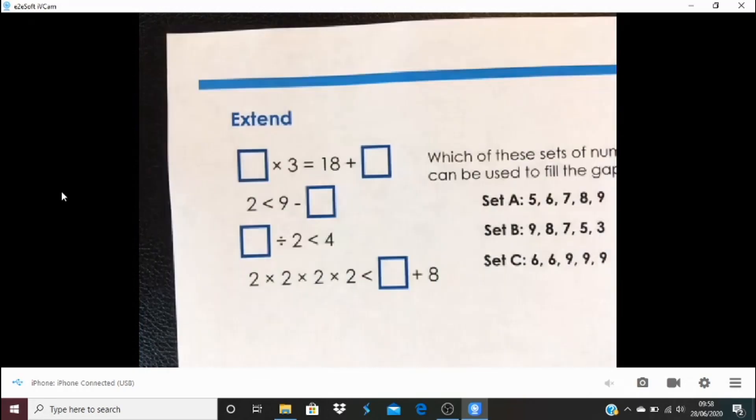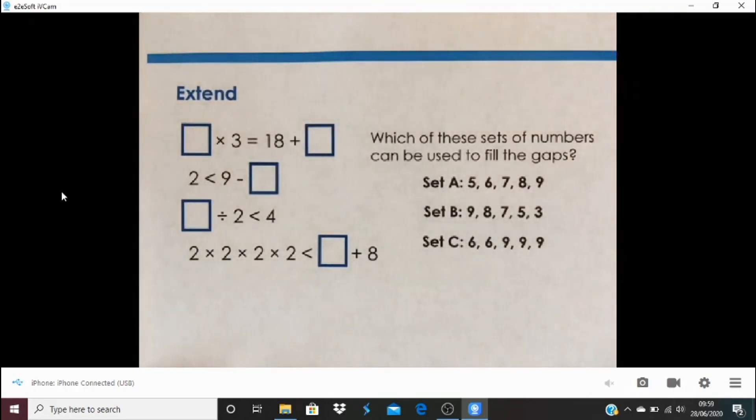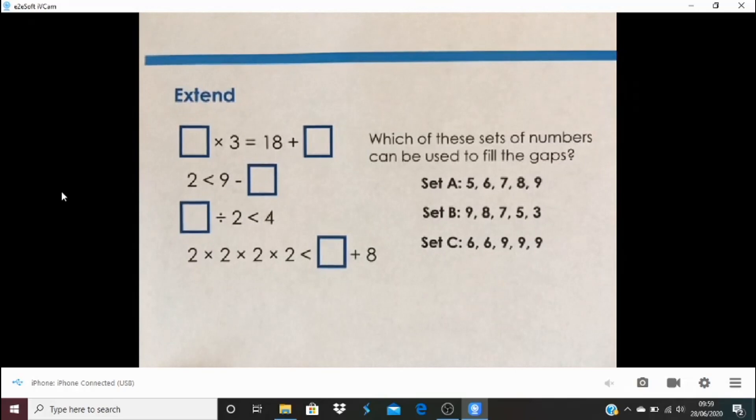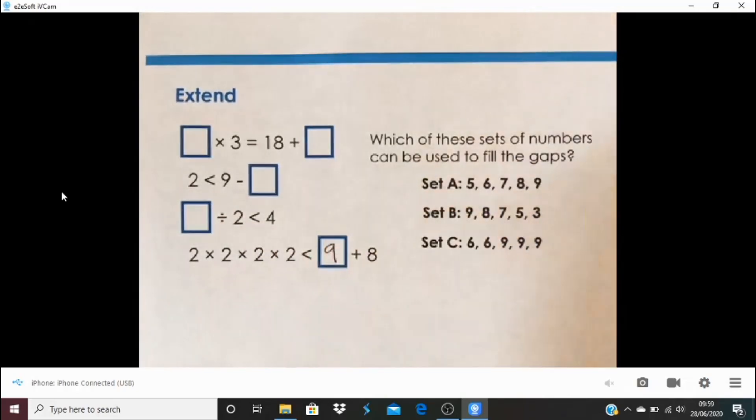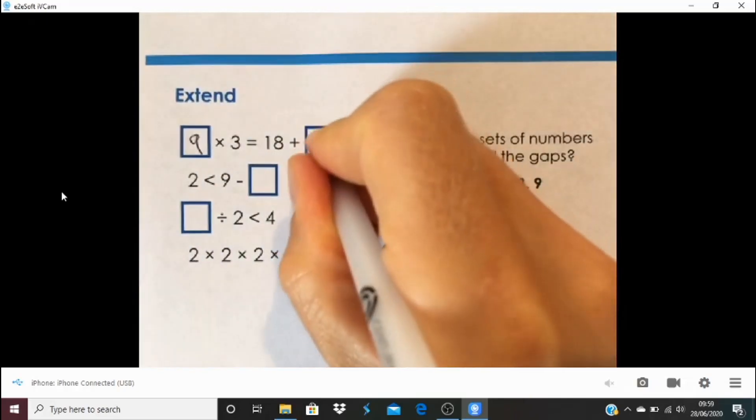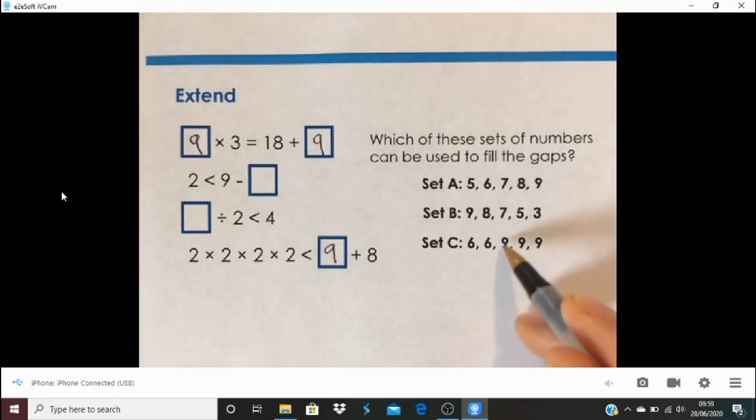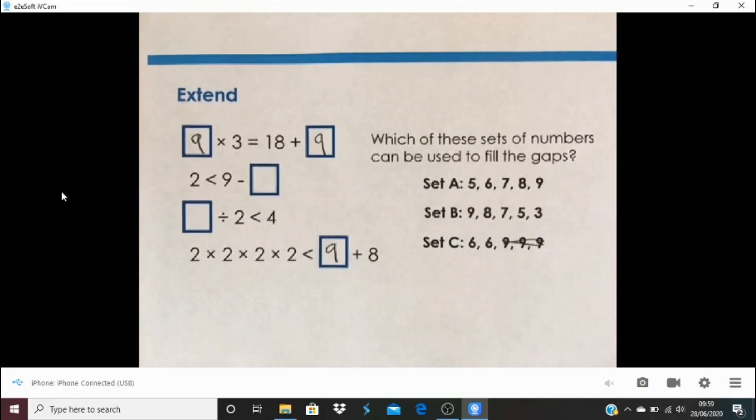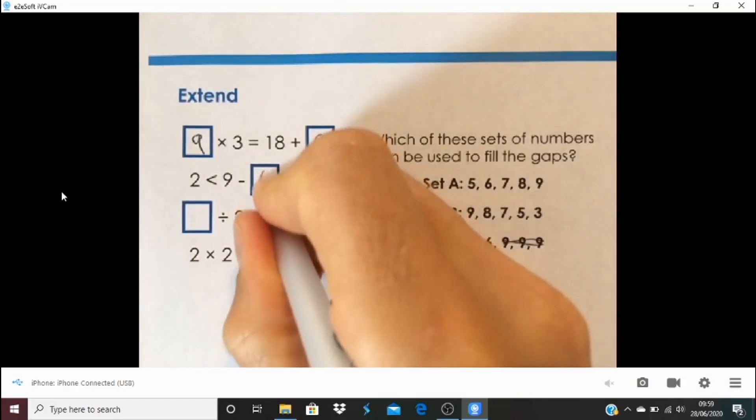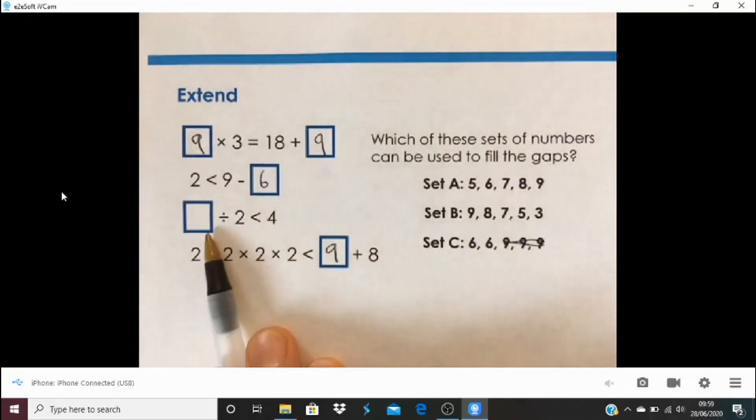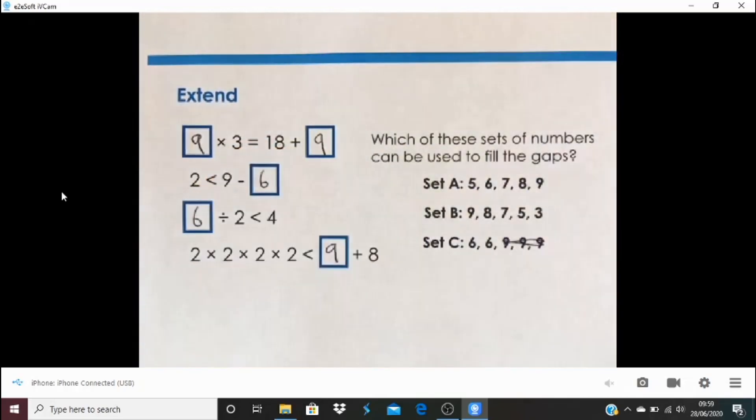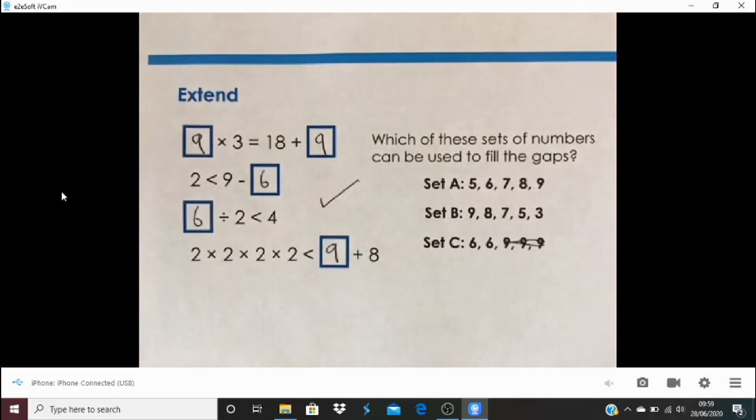But let's have a look at set C. So this time, we've got three different 9s. Now, we knew that from what we described before, that 9s can't go here and here. So I guess I would need to check. Is this possible? Well, we know, yes, a 9 can go here. Does this work? 9 times 3 is 27. Well, 18 is two 9s. And there's another 9. So yeah, they are both three lots of 9s. It's equivalent to 27. So I'm going to cross off all my 9s. So that just leaves these 6s. And yes, 9 subtract 6 is 3, and that is more than 2. And 6 divided by 2, that is less than 4. So there we go. We know that that set works as well.